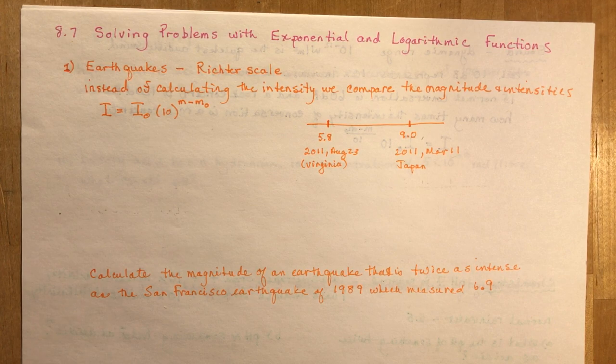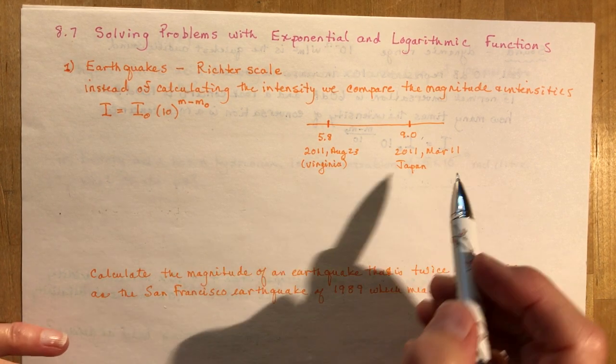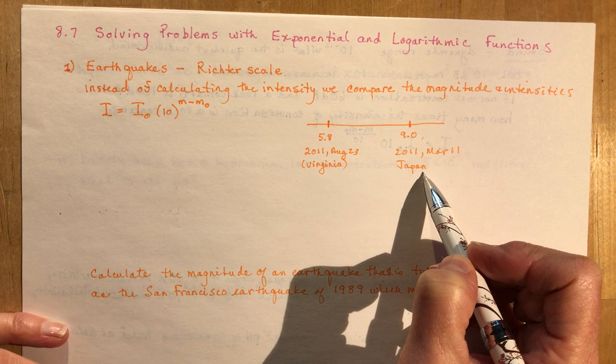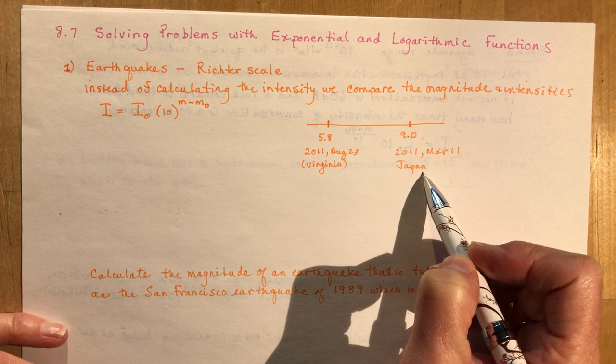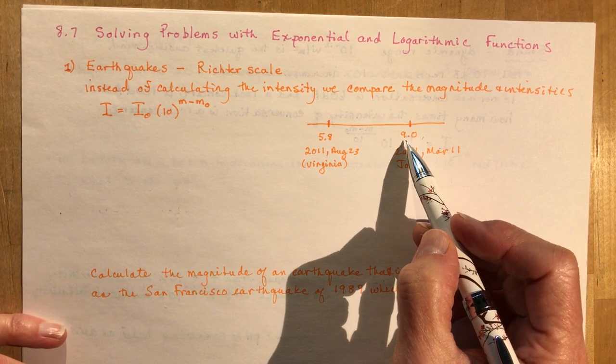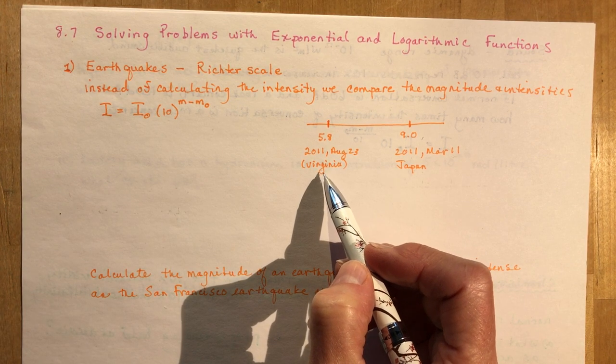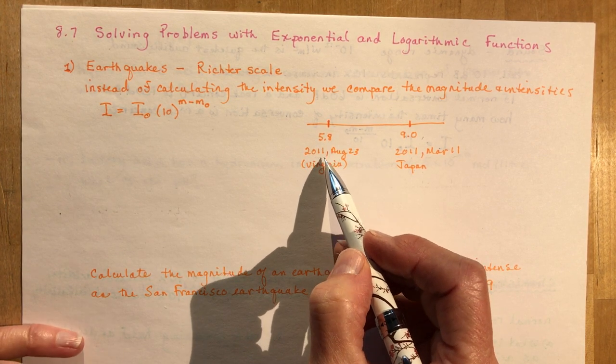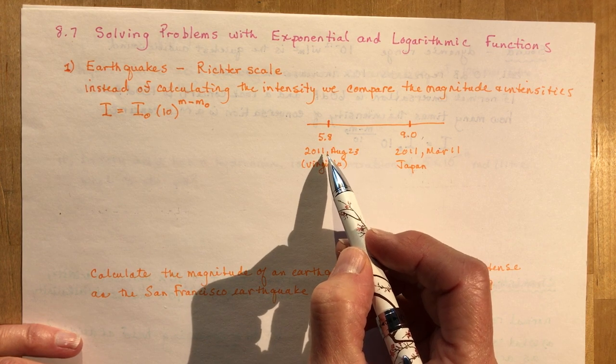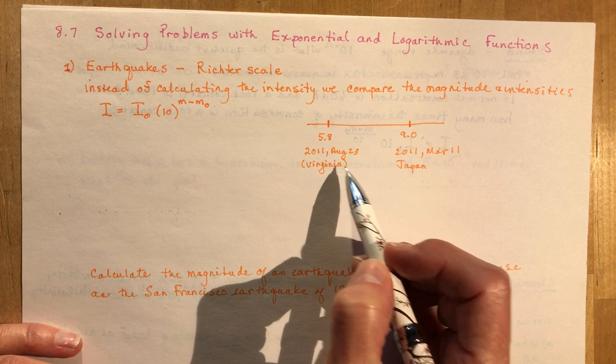The first one is earthquakes. You've probably heard of the Richter scale that measures the magnitude or intensity of an earthquake. We're going to be using this formula to compare the magnitude and intensities. In March 11, 2011, there was an earthquake in Japan off the coast that caused a huge tsunami and destroyed the Fukushima nuclear power plant. It measured 9 on the Richter scale. Whereas in August of the same year in Virginia, a 5.8 earthquake was pretty severe. It was strong enough that I hid under the table in a restaurant and it damaged the Washington Monument.